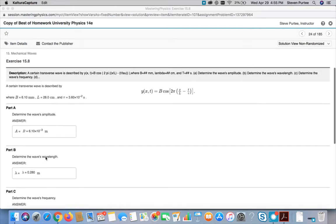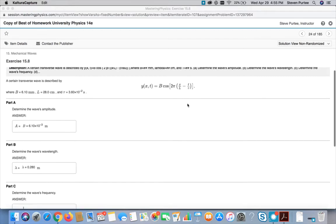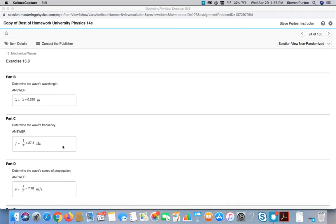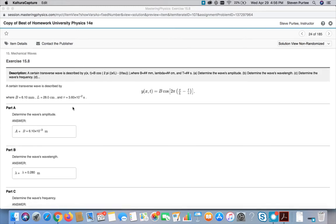Frequency is 1 over the period. So this is our period. 2pi over tau here, they called it, is also known as omega. So this is the period. If we take 2pi and divide by that, we would get omega. Frequency is 1 over the period. So we just take 1 over that tau.